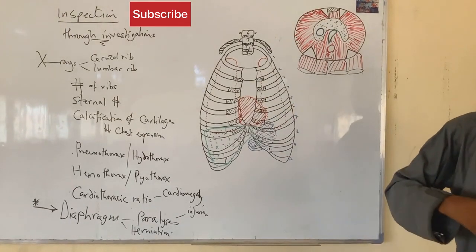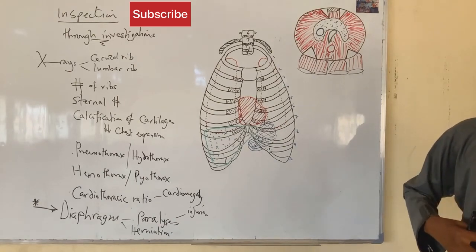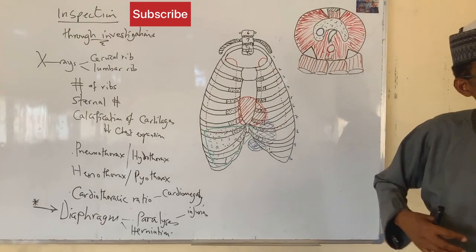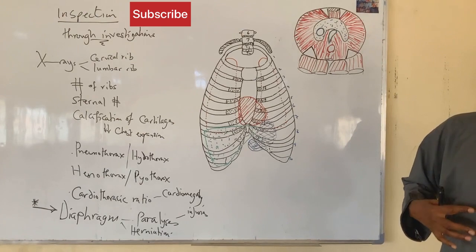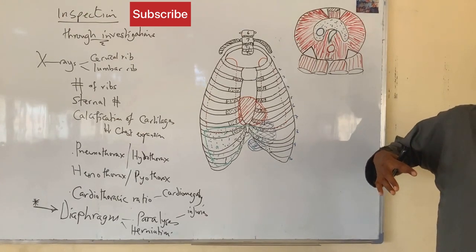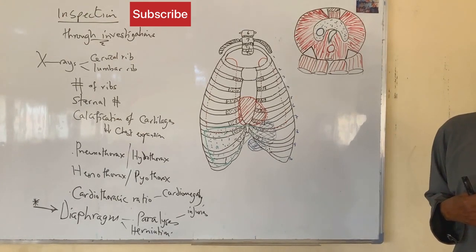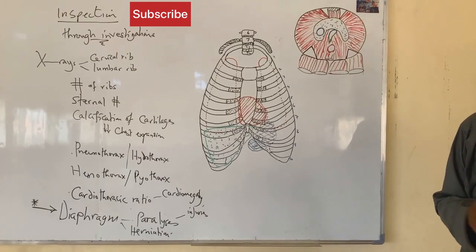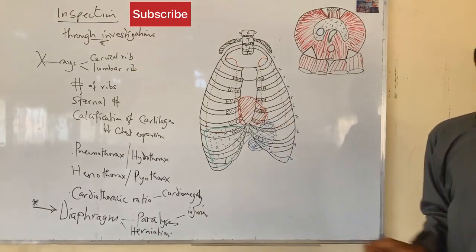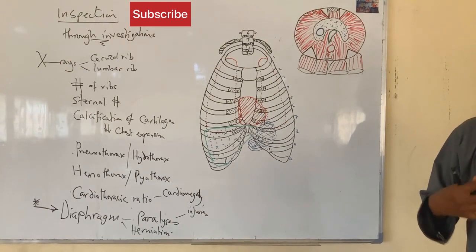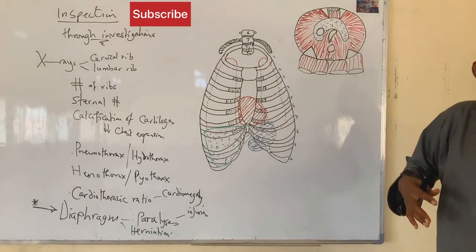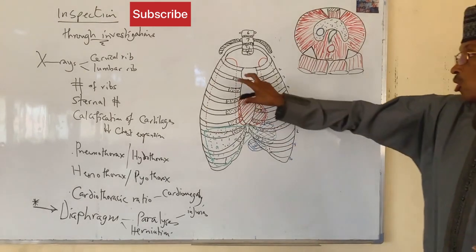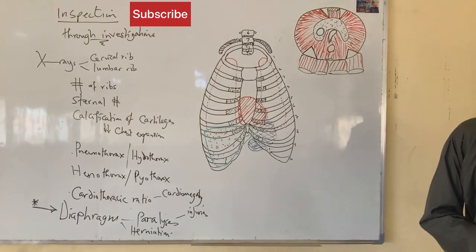The function of the costal cartilages is to allow the chest to expand during inspiration when we take in oxygen and to deflate during expiration when we breathe out carbon dioxide. In someone with calcified cartilages, chest expansion will be affected because the lungs may not have enough room to expand, thereby reducing chest expansion.